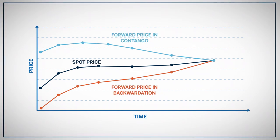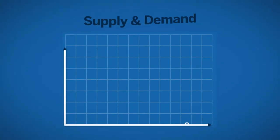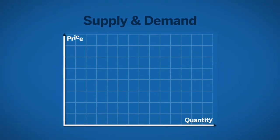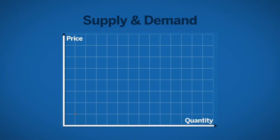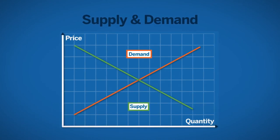Traders will want to know the typical situation for the futures contract they are trading and pay attention if the contract shifts from contango to backwardation or vice versa. Each futures market will have its own supply and demand factors. Traders will want to determine the most important factors and carefully compile the data to build their analysis and trading decisions.